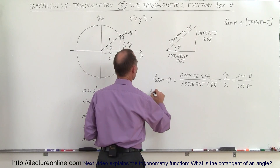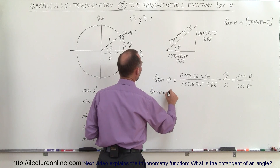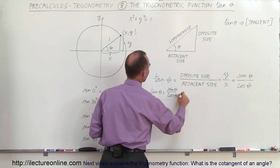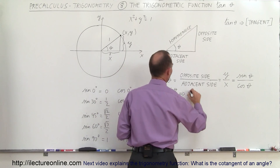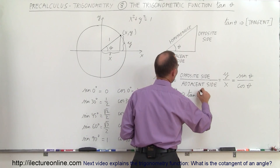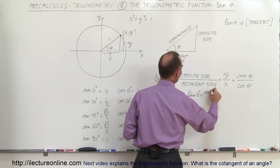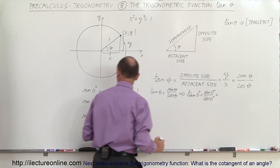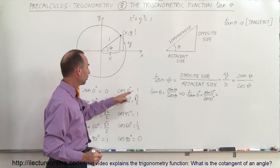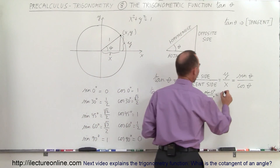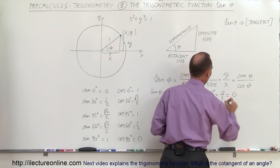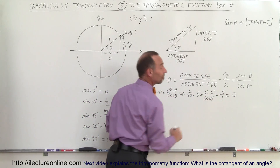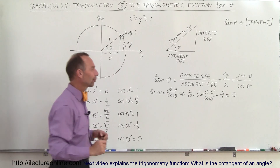Since the tangent of theta equals sine of theta divided by cosine of theta, the tangent of 0 degrees equals the sine of 0 degrees divided by the cosine of 0 degrees. The sine of 0 is 0 and the cosine of 0 is 1, so that's 0 divided by 1, which is 0. The tangent of 0 degrees is equal to 0.